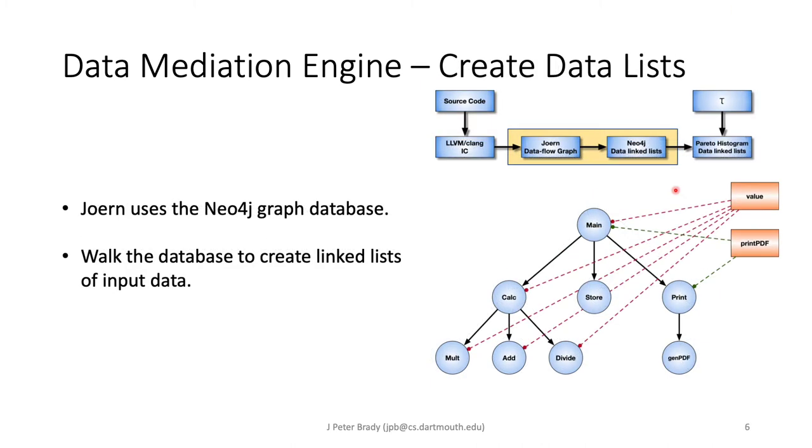From this we will walk through the flow graph looking at our input variables. In this case our simple sample here we have value and print PDF. We find that value is seen in this calc area starting in calc and then its subordinate routines while the variable print PDF is only seen in the print routine. So we'll walk through the database and create a linked list of these input data values and how many times they are seen throughout the program.